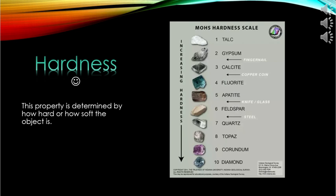Hardness. This property is determined by how hard or soft an object is. According to most scales of hardness, diamond is the hardest object and chalk powder is the softest — meaning it is the least hard, not the hardest.